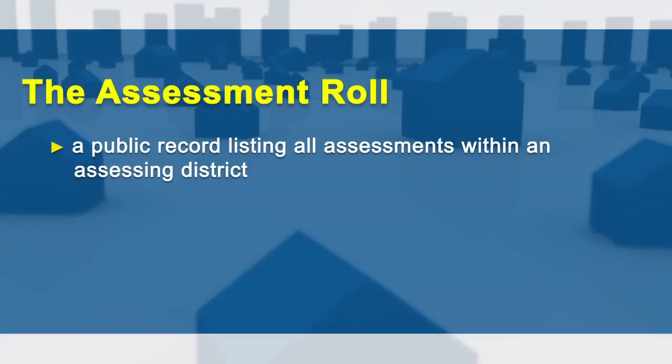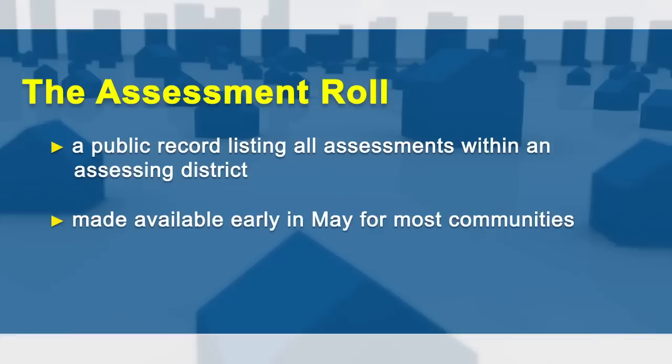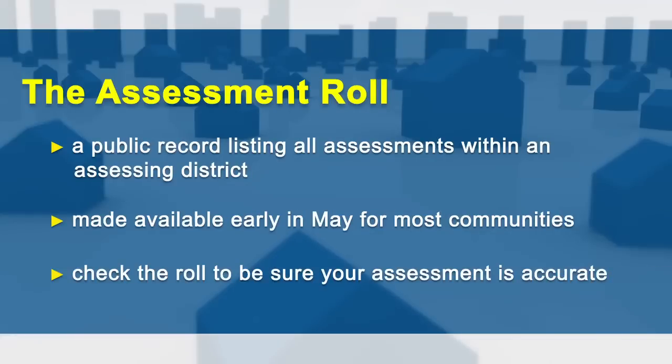If your community assesses at 100% of market value, the total assessed value of your property should be roughly equal to its market value. If assessments are not at market value, you can use the market value listed on the assessment roll as a starting point to determine if you've been assessed fairly. The assessment roll is a listing of all assessments in your community, and in most communities this listing is first made public in the beginning of May. We encourage you to check the assessment roll each year to ensure that you're assessed fairly and are receiving any exemptions for which you're eligible.